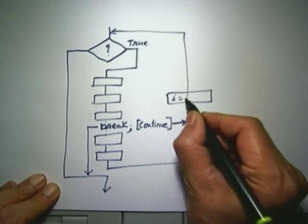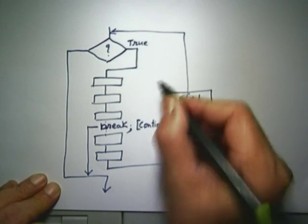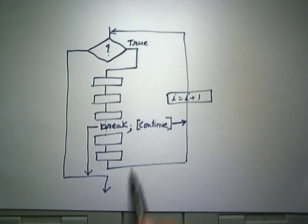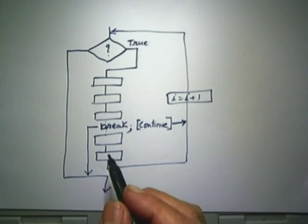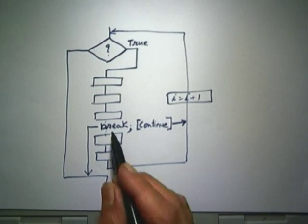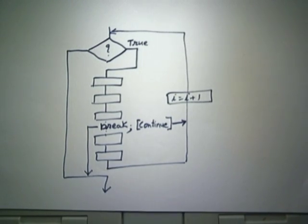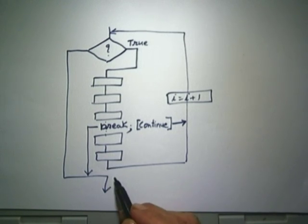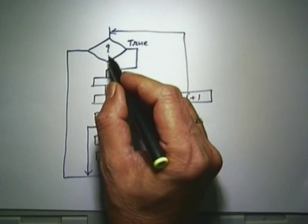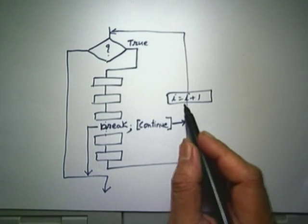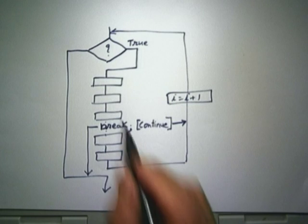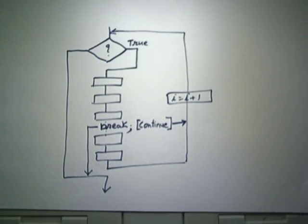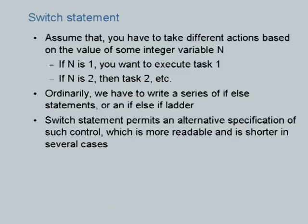When you abandon the iteration block because of break, you abandon it permanently and exit. Because of continue, you abandon the remaining part and go to the increment point in a for loop, then go back. The break statement is also used in the context of another conditional control called the switch statement, which we shall look at in a moment.